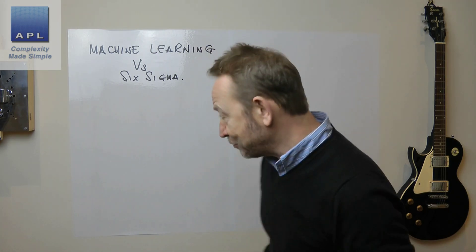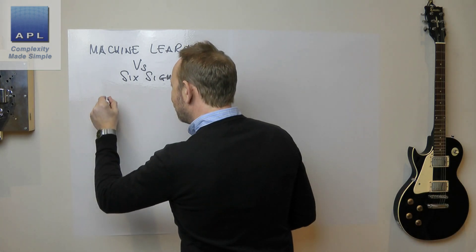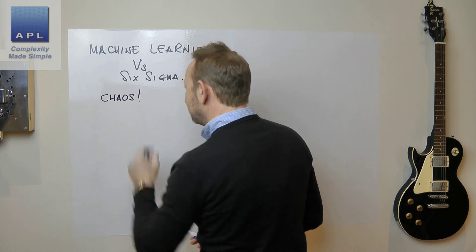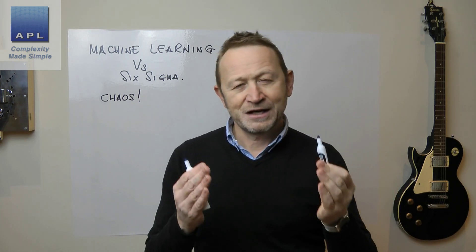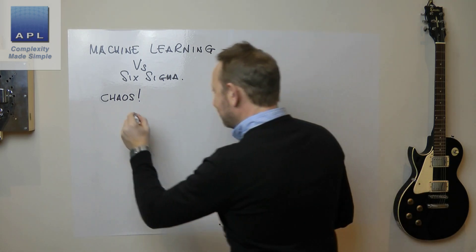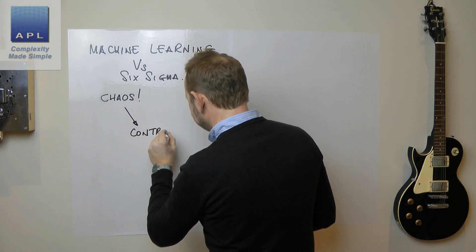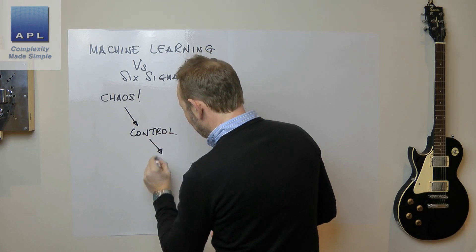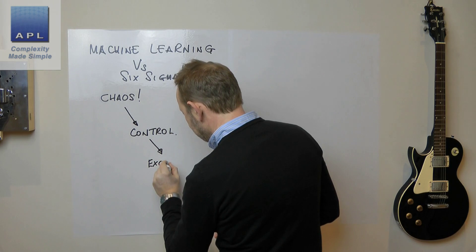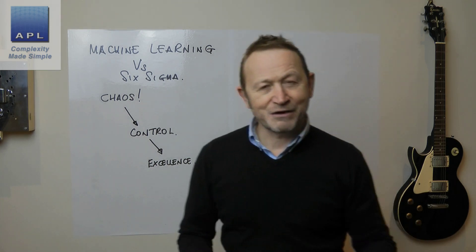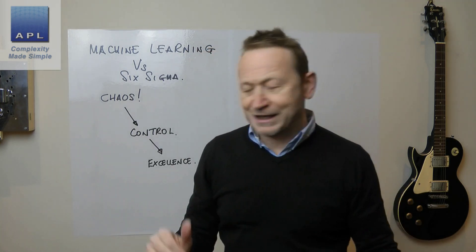People love to buy technology and they always think technology is the answer to all of their problems. So, let's start by reminding you of the three states your process could be in. Your process could be in a state of chaos, a state of control, or a state of excellence.